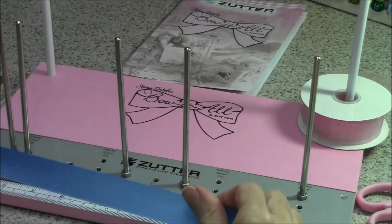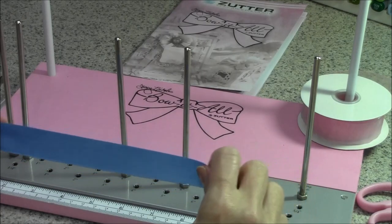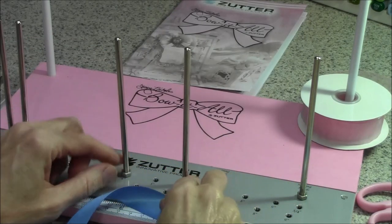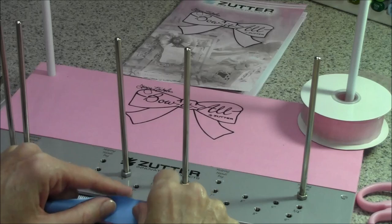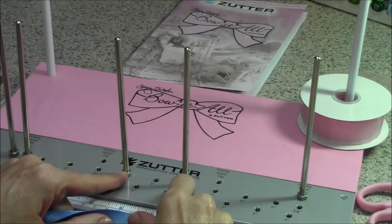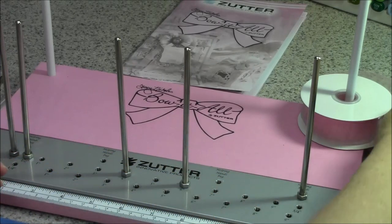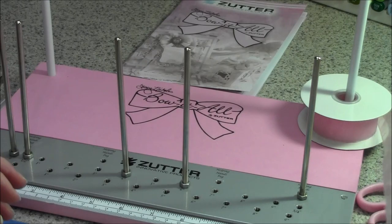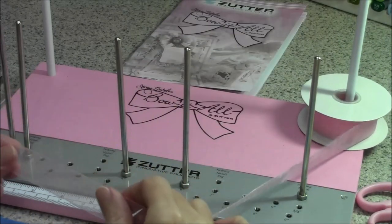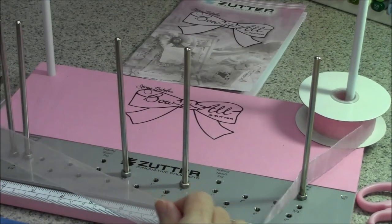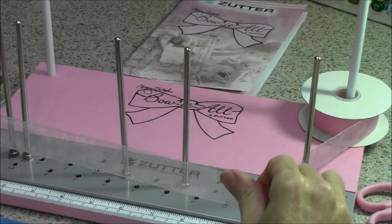I'm starting today with 7/8 inch double face satin and we're going to start with a traditional one loop on each side bow that is two inches wide. When I'm talking about the locking C-knot you'll hear me refer to the cut end of the ribbon and the working end of the ribbon.